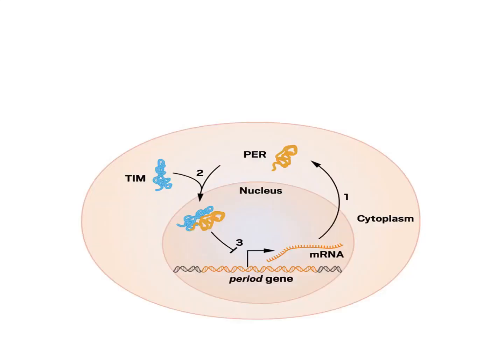They explained that we have a gene known as the period gene in the DNA that produces mRNA, and in the cytoplasm it is responsible for the formation of a protein known as PER. This protein PER, together with TIM, enters into the nucleus and acts as an inhibitor.